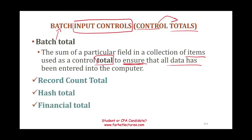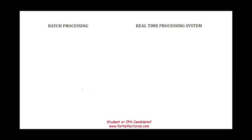Before we discuss those three items — record count total, hash total, and financial total — we need to differentiate between what's called batch processing and a real-time processing system.